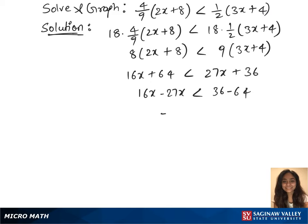Combine the like terms. And we have now minus 11x less than minus 28. Now divide minus 11 on both the sides. That gives us x greater than 28 over 11. Put this in interval notation.